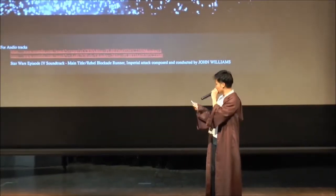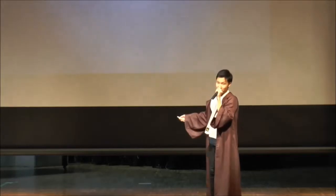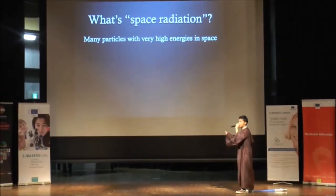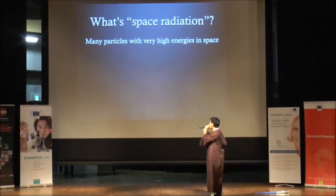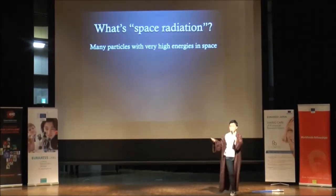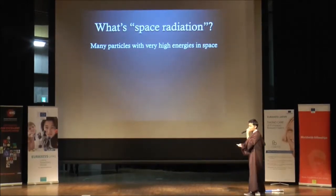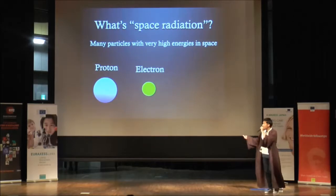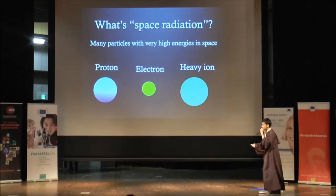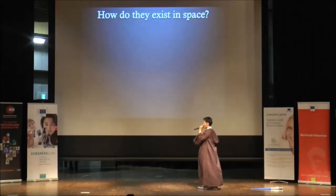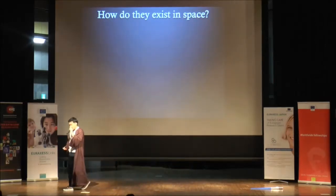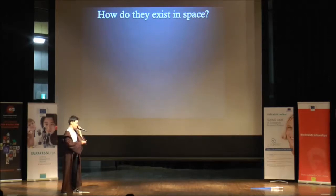Space radiation is many particles with very high energies in space. They include three particles: Proton, Electron, and Heavy Iron. So how do they exist in the space environment? As I mentioned, there are three particles in space radiation.